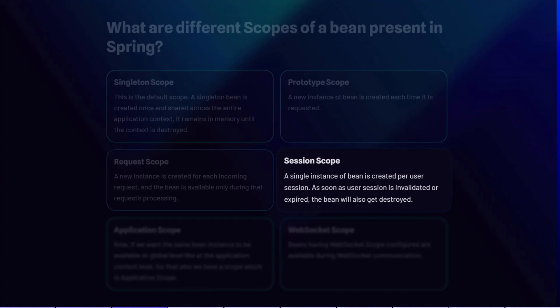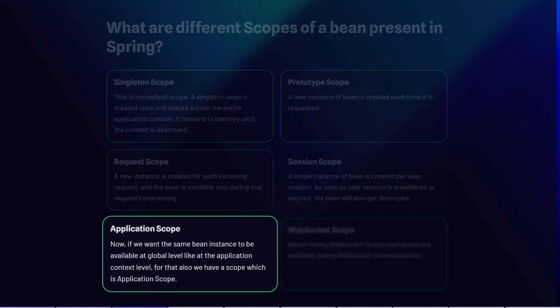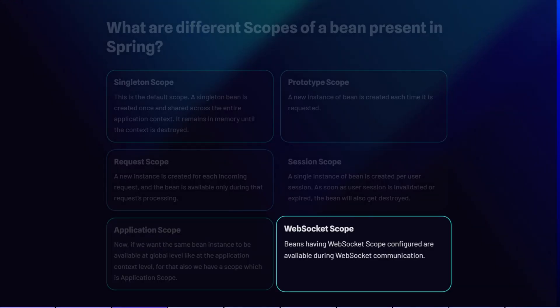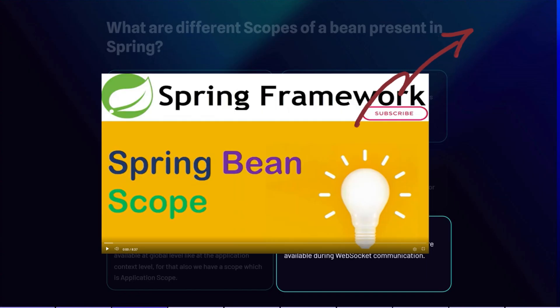Once request processing is complete, the bean is destroyed. We also have session scope — a single instance of the bean is created per user session and remains available throughout the session's lifetime. When the session is invalidated or expired, the bean is destroyed. There is also application scope for a bean shared at the global application context level, and web socket scope for beans available during WebSocket communication.